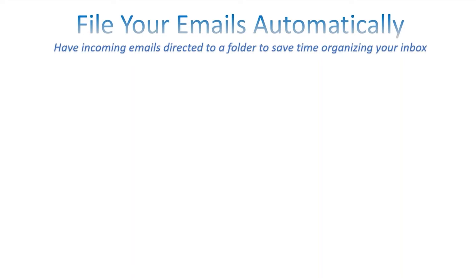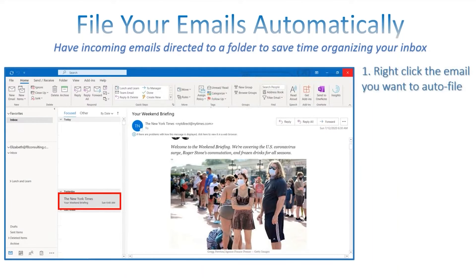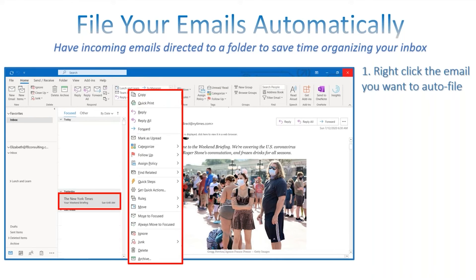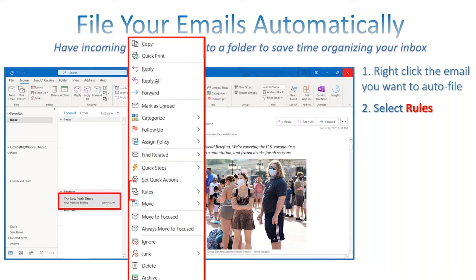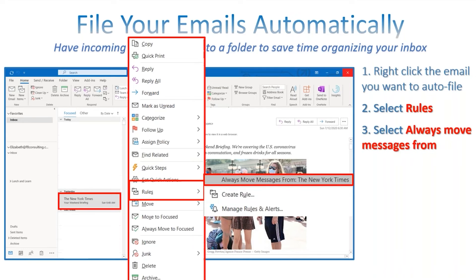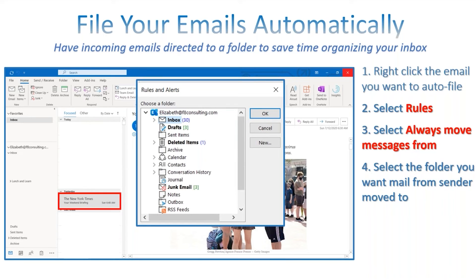You can also file your emails automatically — a simple way to keep your inbox clutter-free. You can have incoming emails directed to a folder to save time organizing your inbox. For example, I subscribed to the New York Times and those emails were coming into my Focus Inbox, which I use for work. So to fix that, just right-click on the email you want to auto-file, go to the drop-down menu, click Rules, and then click 'Always move messages from' that sender.